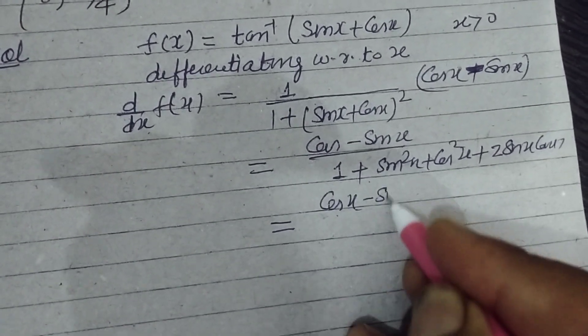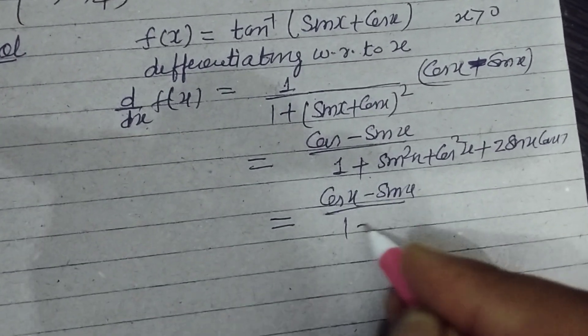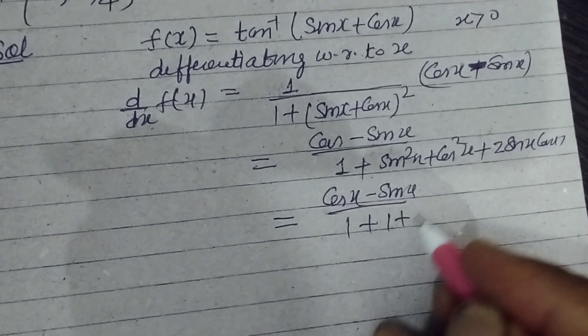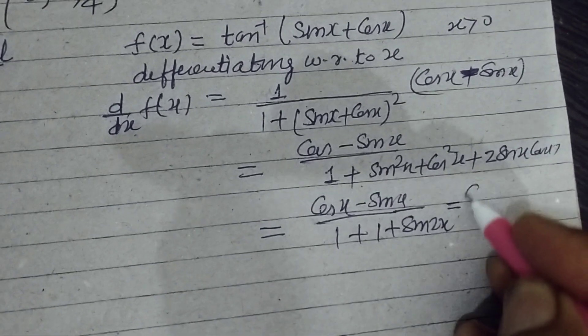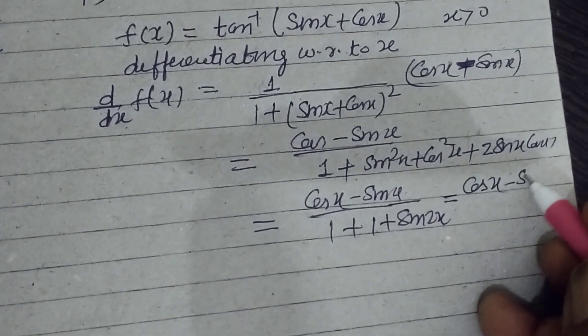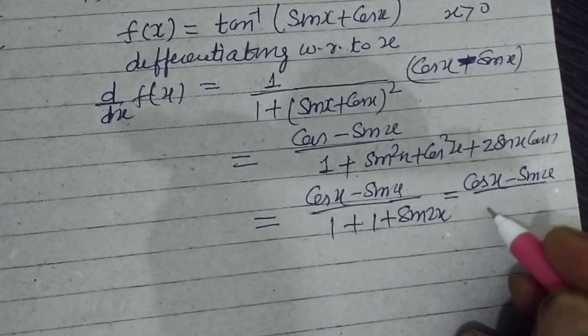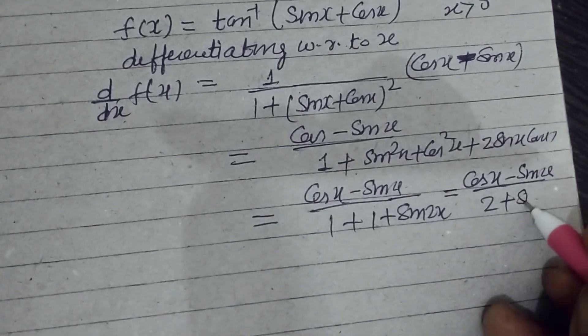This simplifies to (cos x - sin x)/(1 + 2sin x cos x), which equals (cos x - sin x)/(2 + sin 2x).